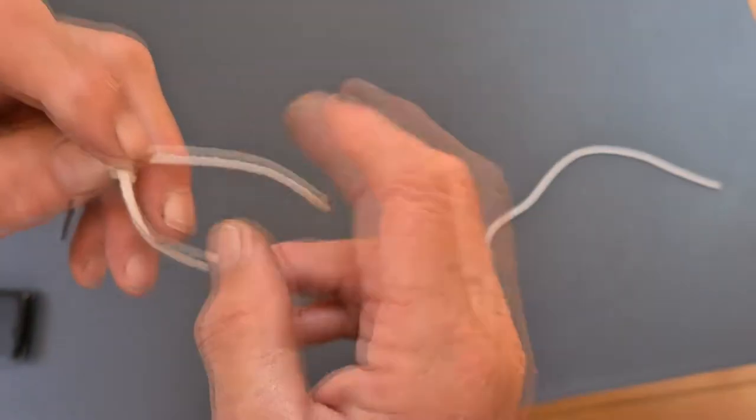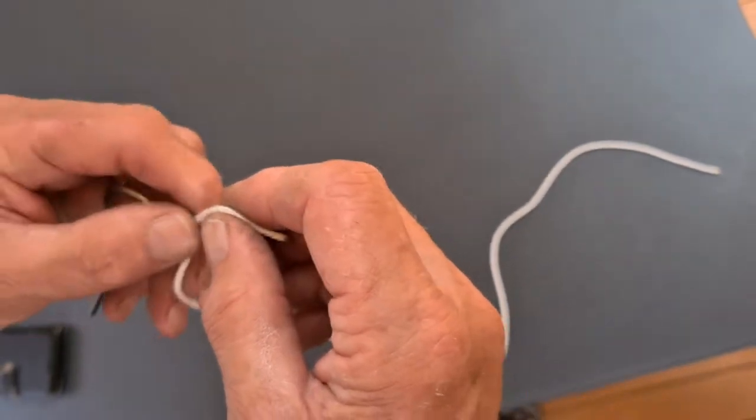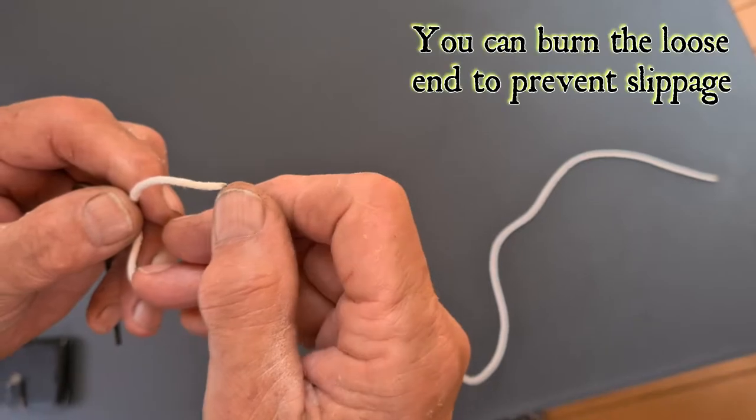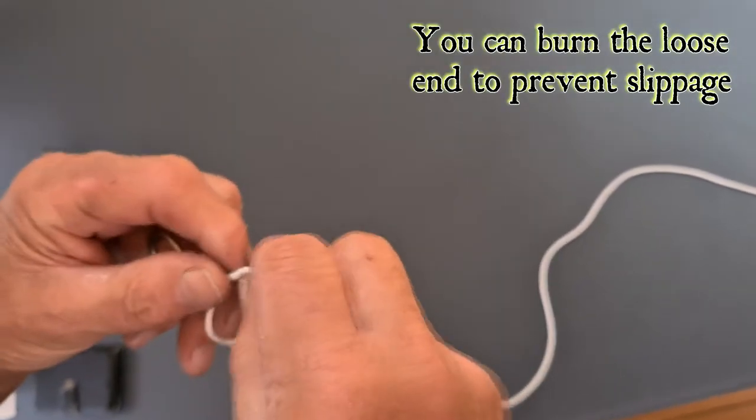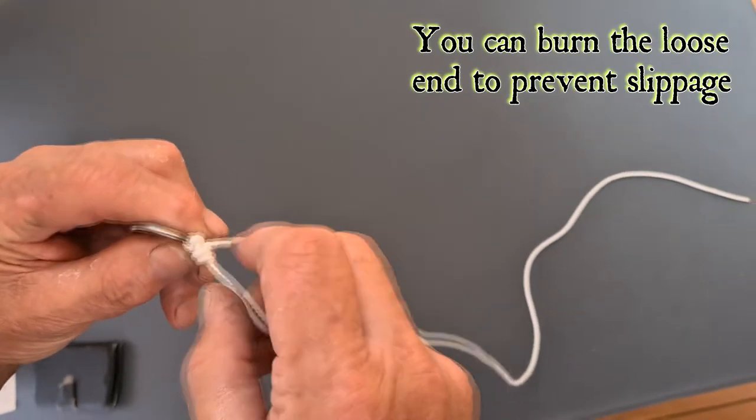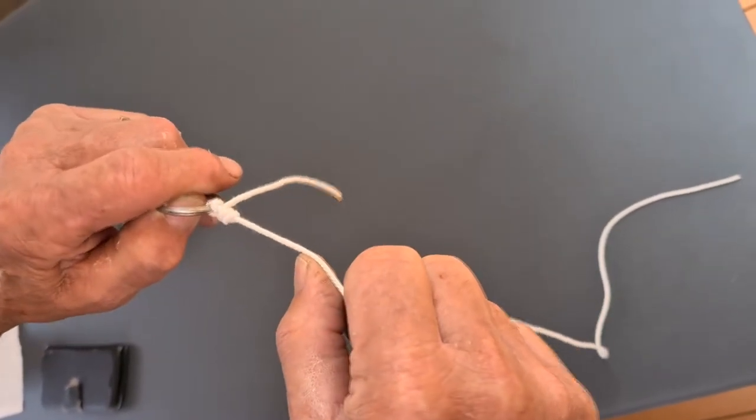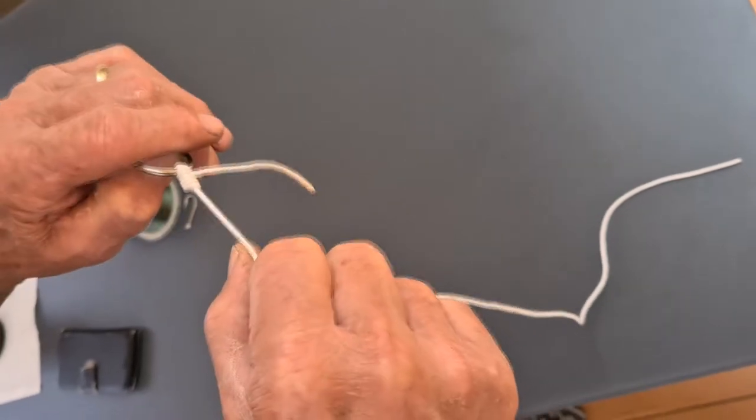We'll show you later on, the actual fishing line, if you happen to have a lighter with you, just burn the end of that, that forms like a little bubble on the end, and that will stop any line from pulling through there. So yeah, that's the knot that we found the strongest and the safest.